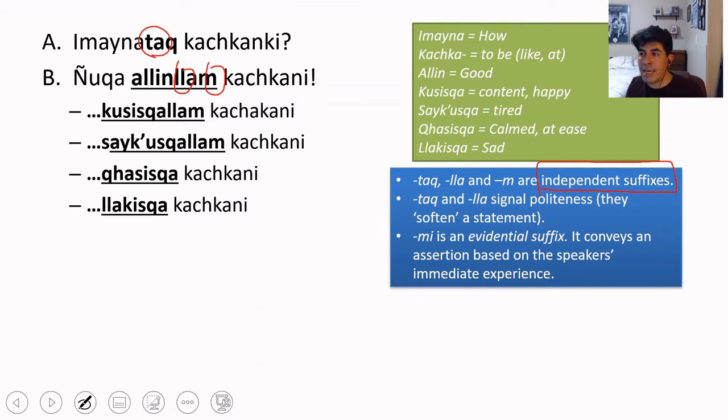Tach and lyak, they signal politeness. So they are used to soften a statement. If you don't, you could actually say imayna kashanki. But if you say that, you're going to sound too harsh.